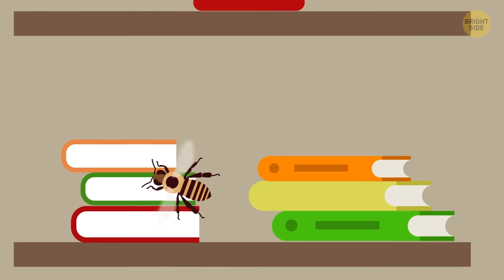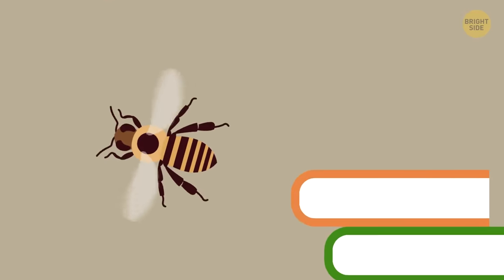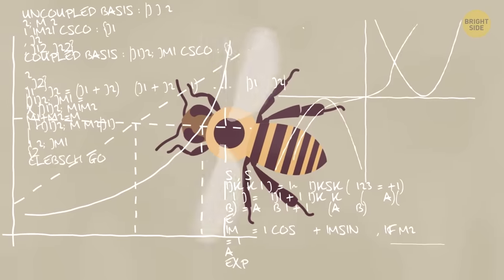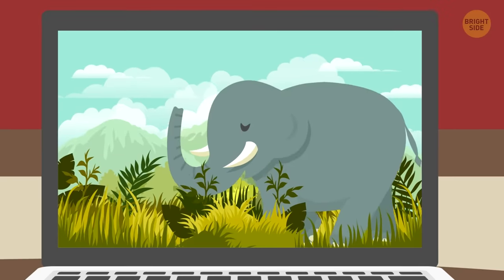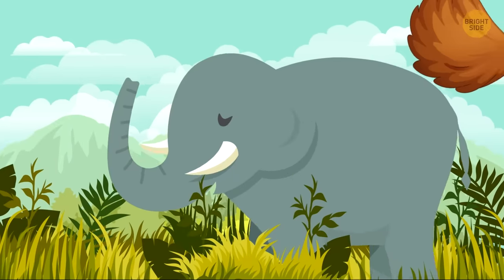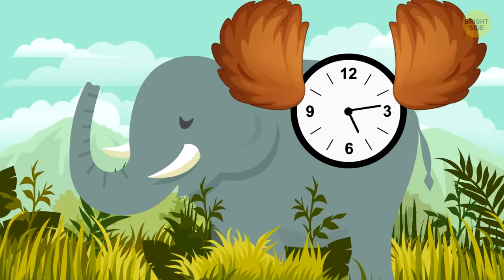Some small birds and insects see the world in slow-mo because they process information too quickly. For some big animals, on the other hand, time is literally flying by because they need more time to perceive information.